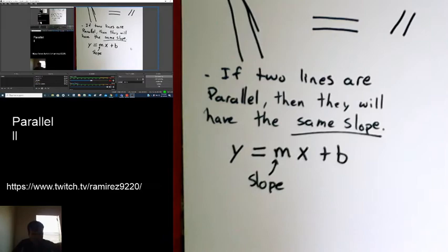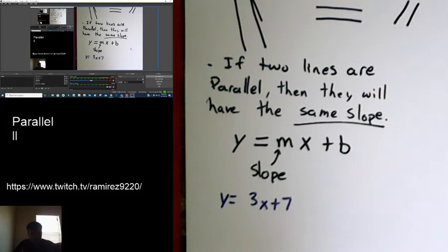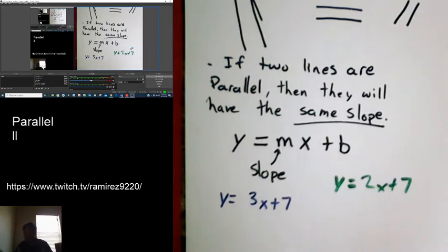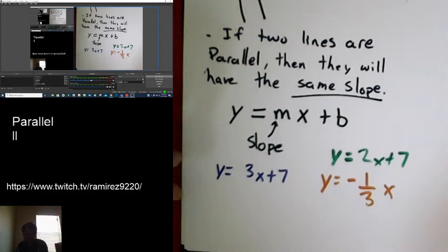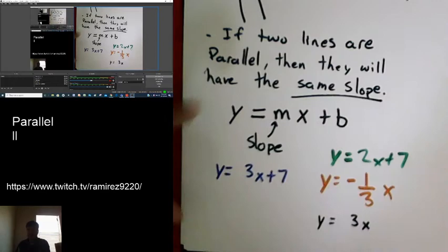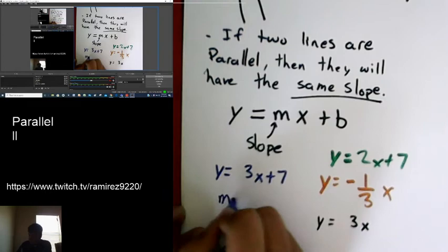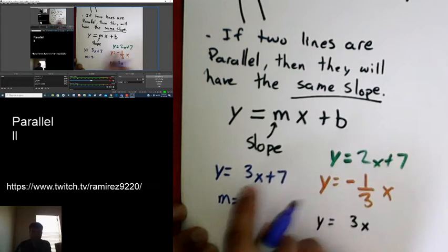So if two equations are parallel, and one of the equations was y equals 3x plus 7, and you wanted to know which of the following equations was parallel to it, and your options were y equals 2x plus 7, y equals negative 1 over 3x, and y equals 3x. Well, the very first thing we do is we look at our equation, and our slope happens to be 3. So when you're comparing it to your other equations, that's all you have to look for. Which of these has a 3 right before the x?